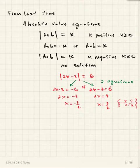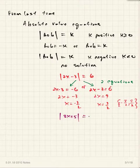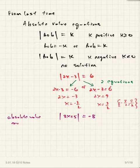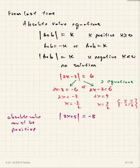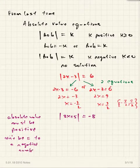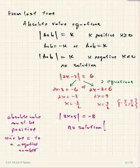If you have the absolute value of 3x plus 5 equal to negative 8, absolute value must be positive, so it can never equal a negative number. When you see an equation like that, you stop right away and say there's no solution.